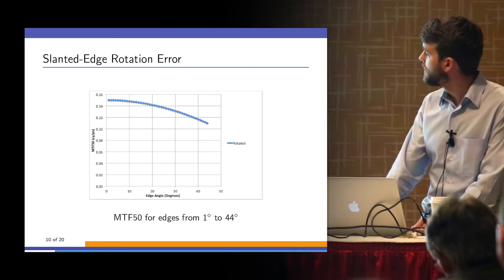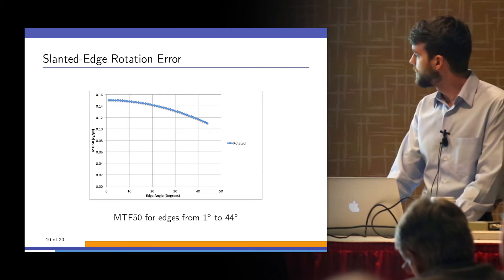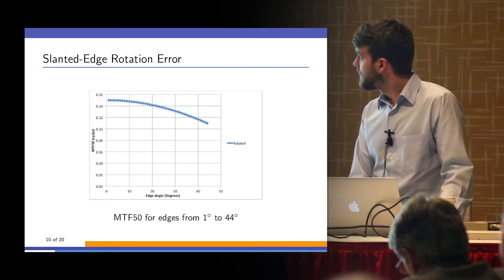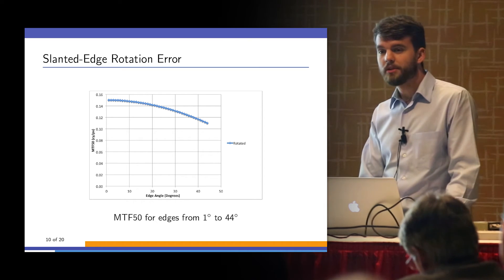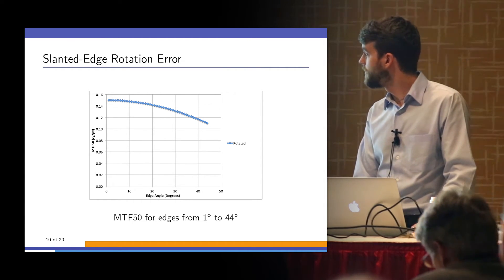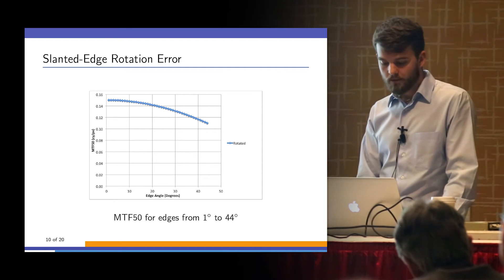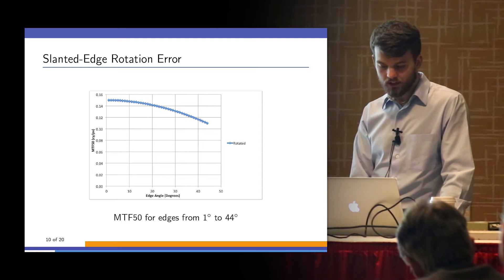You can see that here. We have values going from one degree to 44 degrees and the MTF drops off pretty dramatically. The difference between one degree and 44 degrees is about 22% right there, which I think you'd agree is a significant loss.